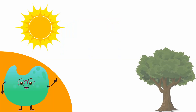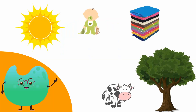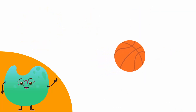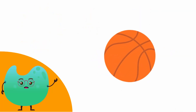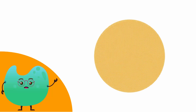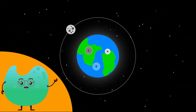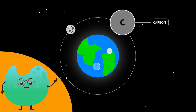Over time, scientists discovered through research that all matter — which is anything that occupies space and has mass — is made from billions of different types of atoms. Living things, for example, are mostly made from the atoms carbon, hydrogen, and oxygen.